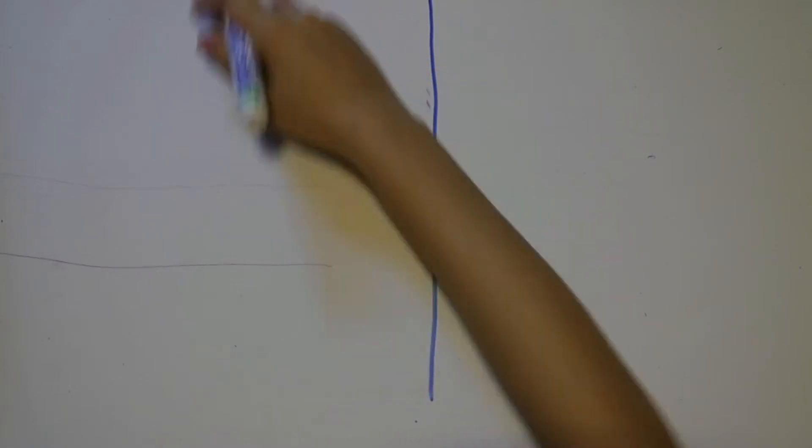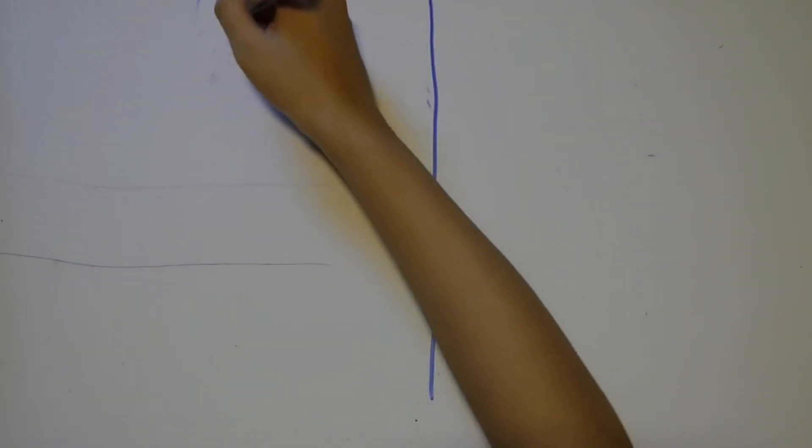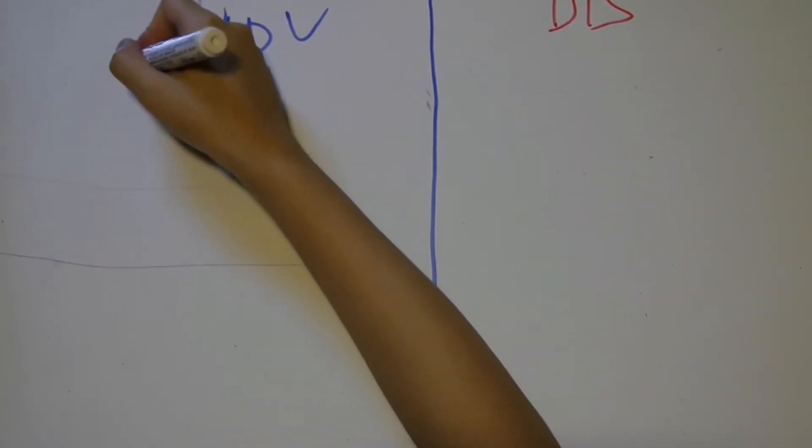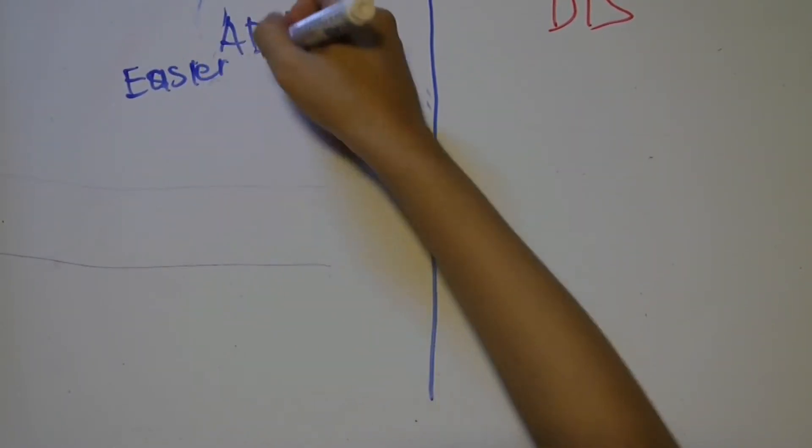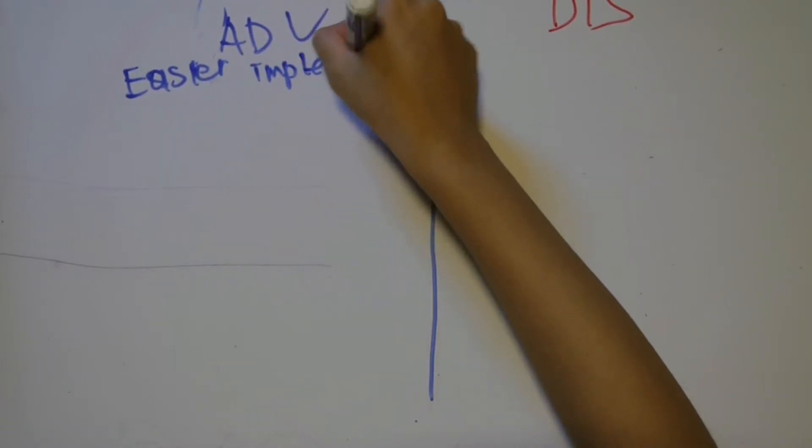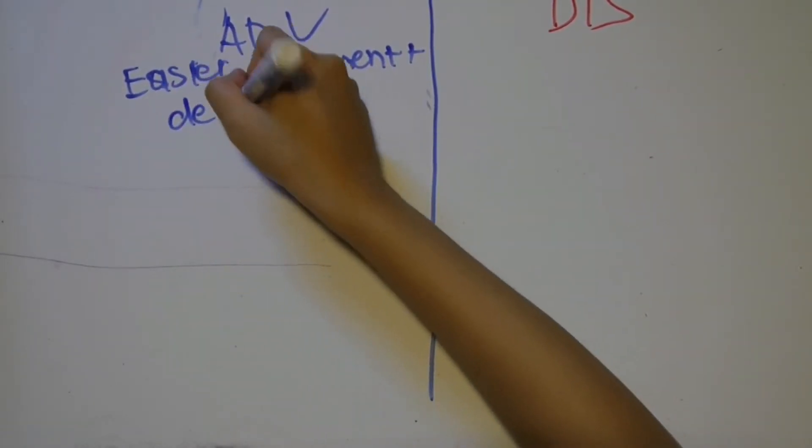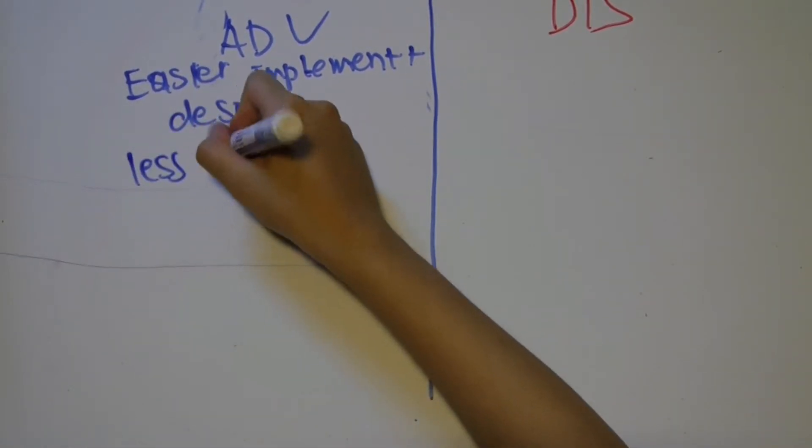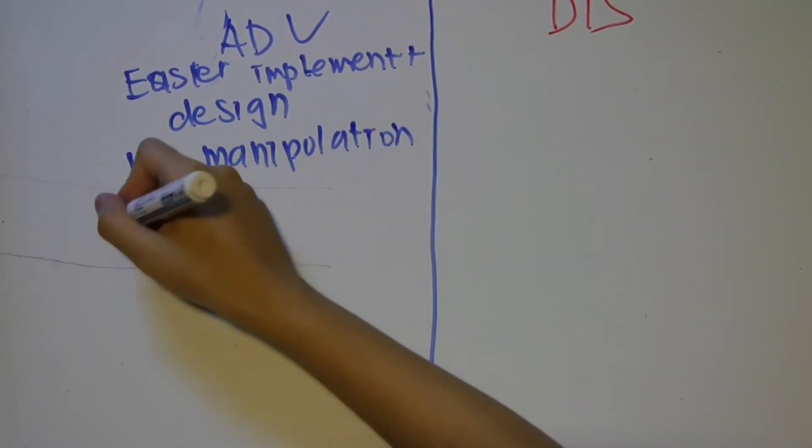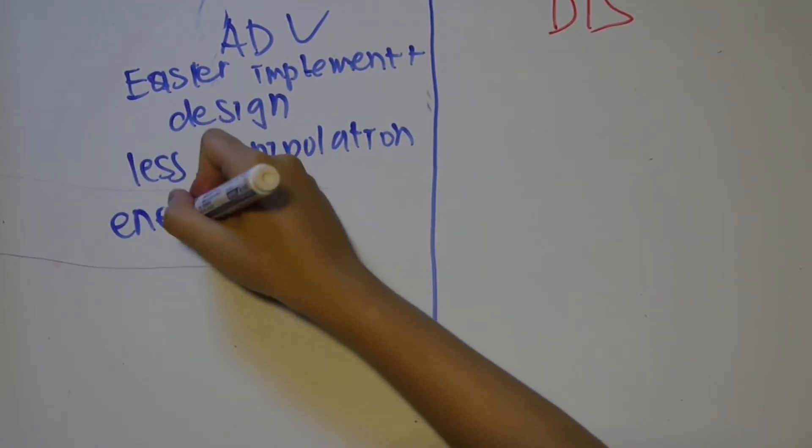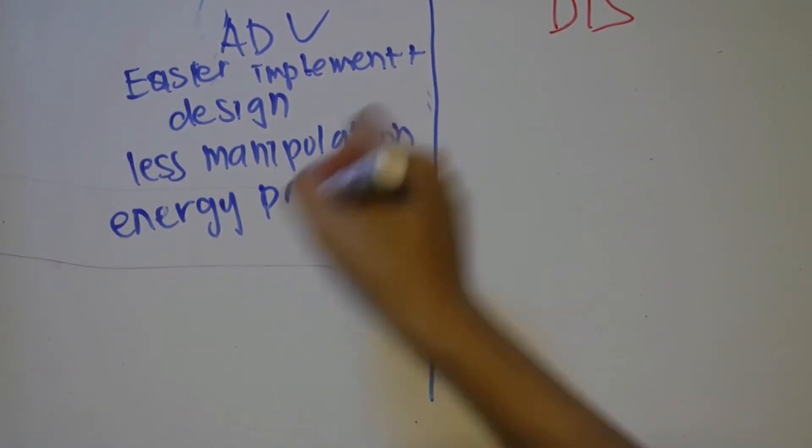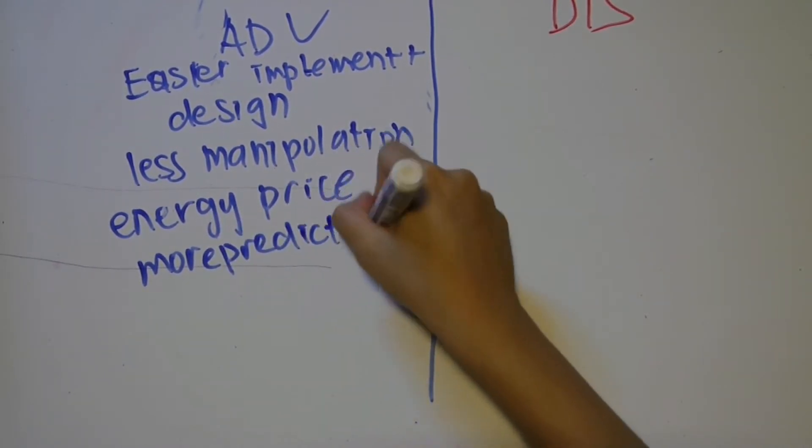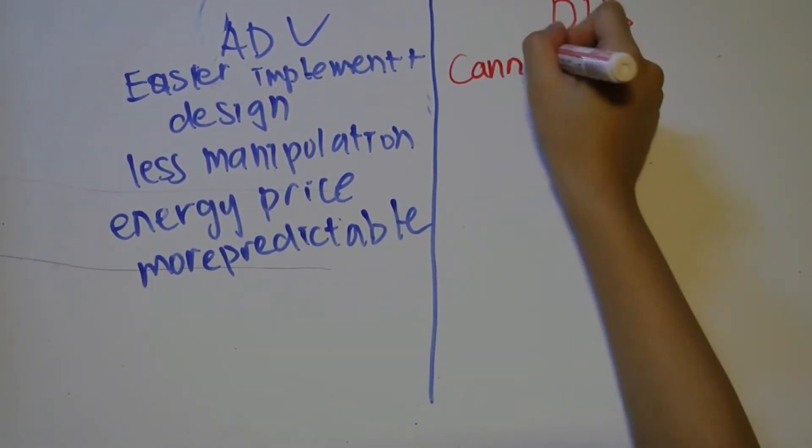Carbon tax has its own advantages and disadvantages. For example, carbon taxes are easier to design and implement than the cap and trade scheme, as a cap and trade scheme involves setting the cap at the right level and distributing the permits. Carbon tax does not offer opportunities for manipulation by the government and interest groups. Carbon tax makes energy prices more predictable since carbon tax fixes the price of carbon emissions. Price predictability is important for businesses that need to plan their costs ahead of time.